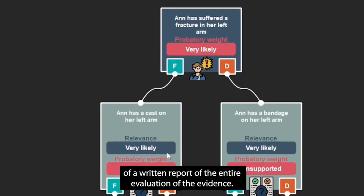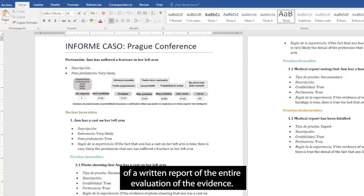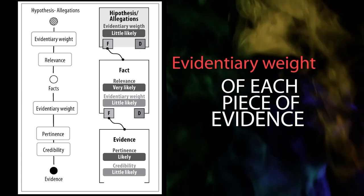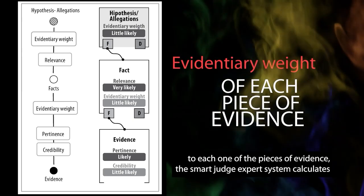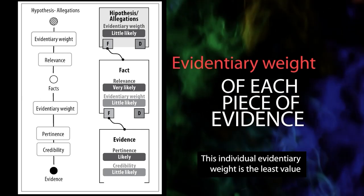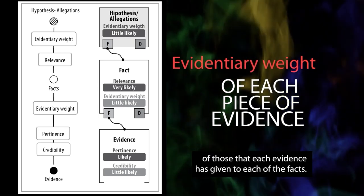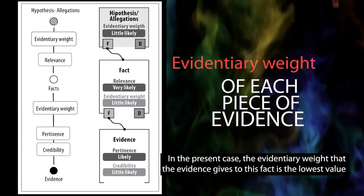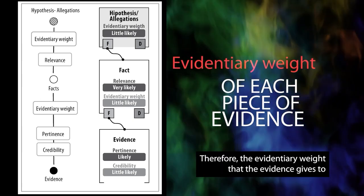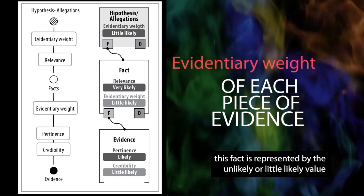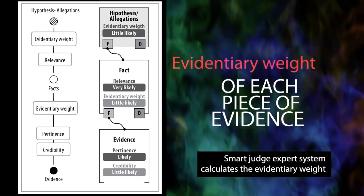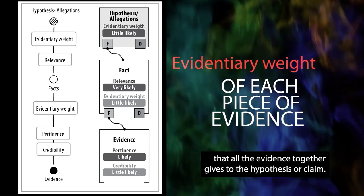Finally, the intelligent judge expert system allows the generation of a written report of the entire evaluation of the evidence. In short, the intelligent judge expert system performs an individual and joint evaluation of the evidence. Taking into account the credibility and pertinence values assigned to each piece of evidence, the smart judge expert system calculates the evidentiary weight that each evidence gives to each fact. This individual evidentiary weight is the least value between pertinence and credibility of those that each evidence has given to each of the facts.